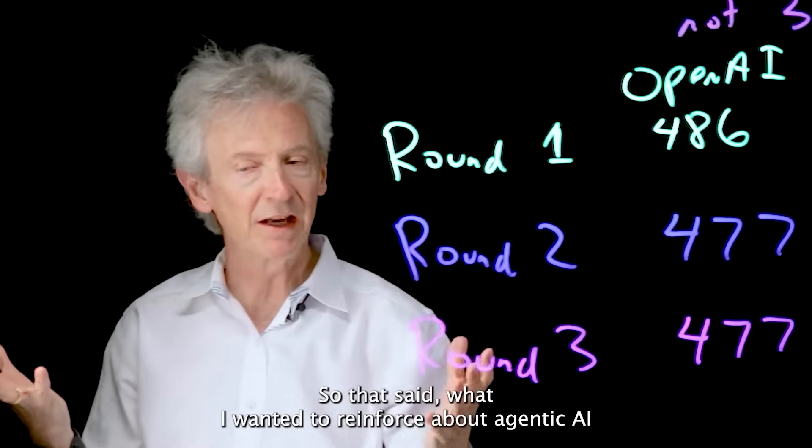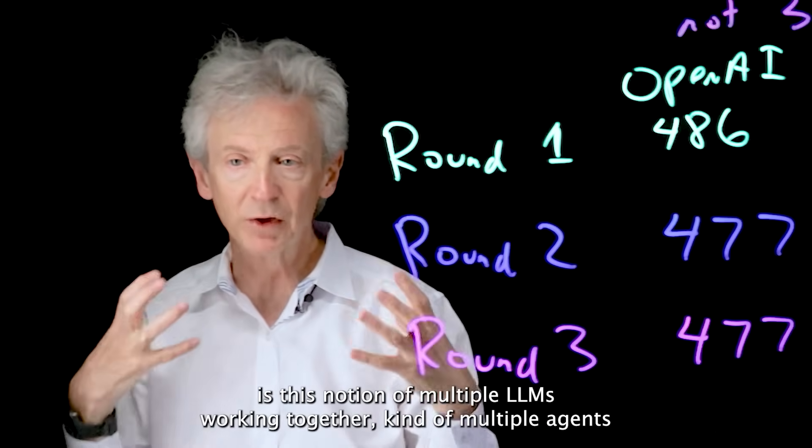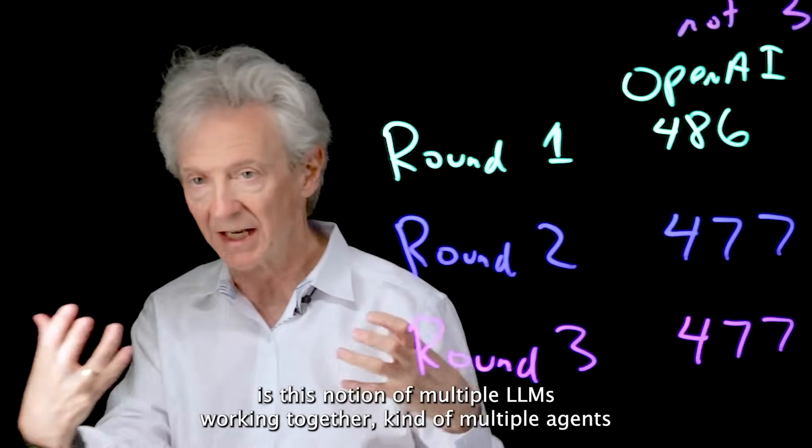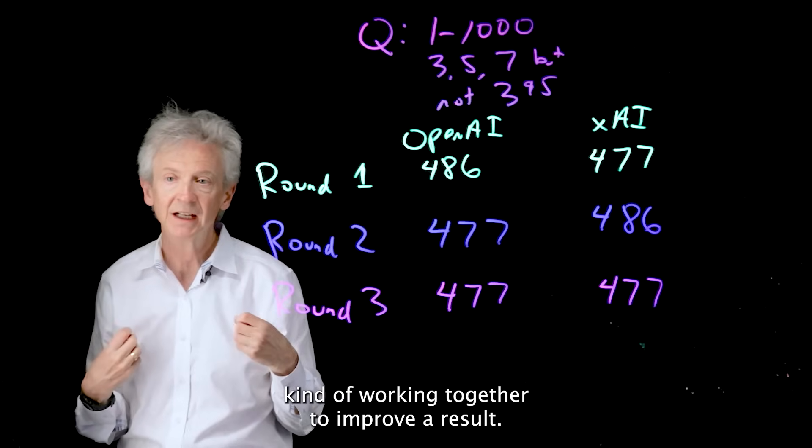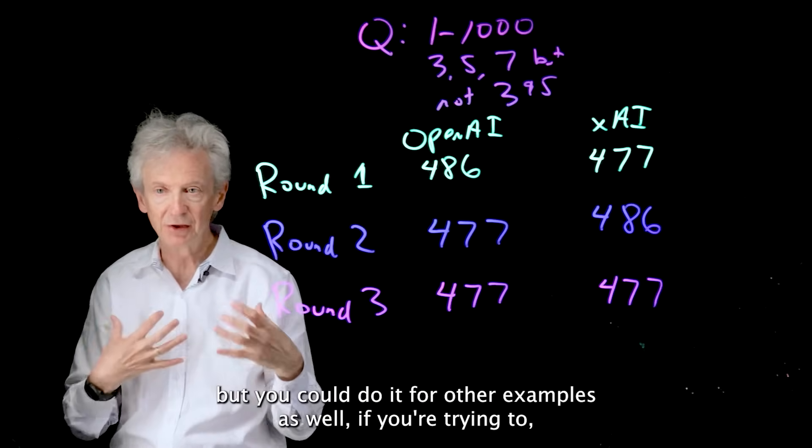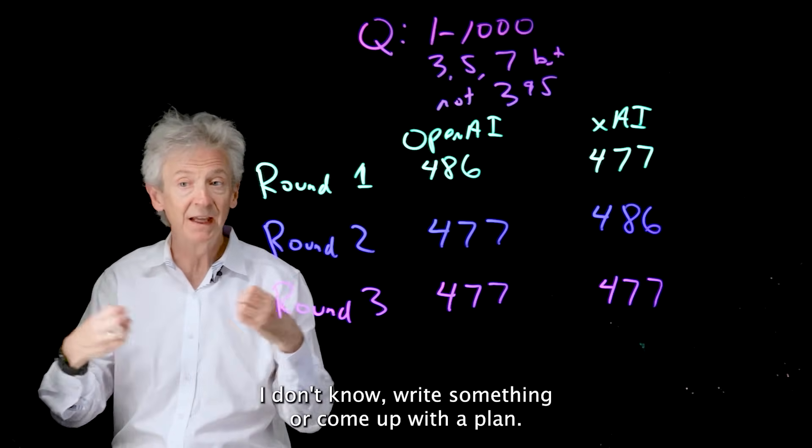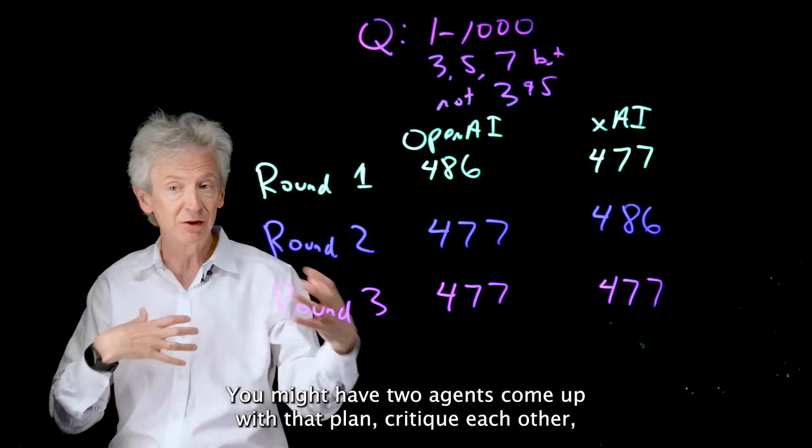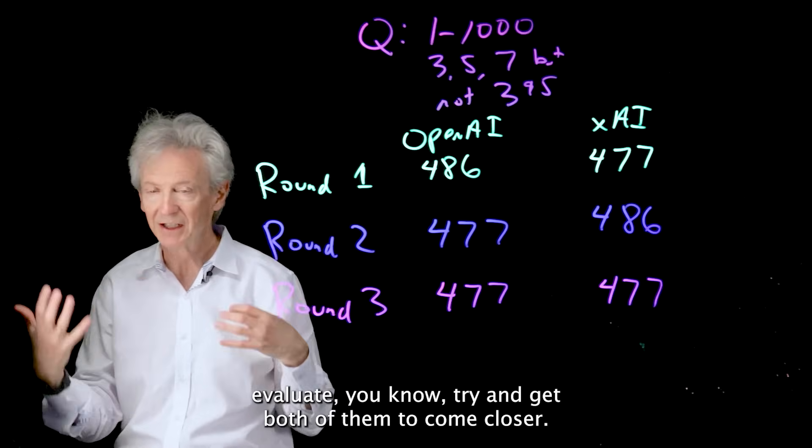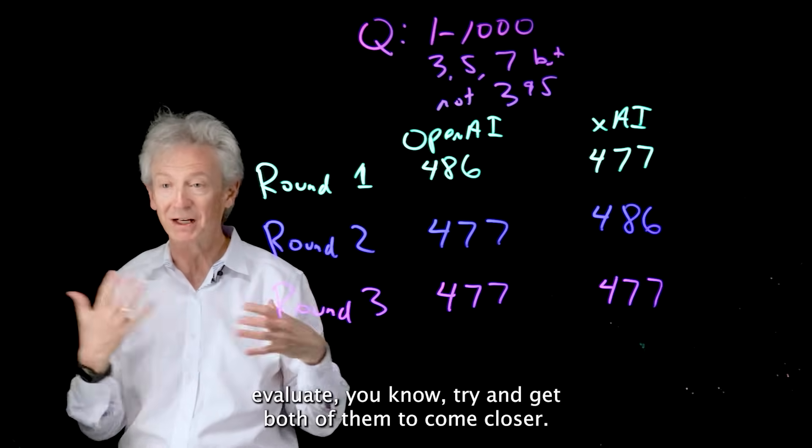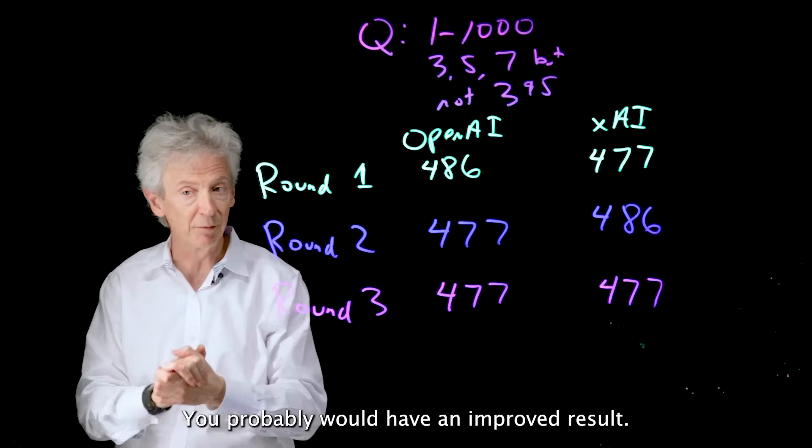So that said, what I wanted to reinforce about agentic AI, is this notion of multiple LLMs working together, kind of multiple agents working together to improve a result. This concept of debating you can do for math, but you could do it for other examples as well. If you're trying to write something or come up with a plan, you might have two agents come up with that plan, critique each other, evaluate, try and get both of them to come closer. And you might have an improved result. You probably would have an improved result.